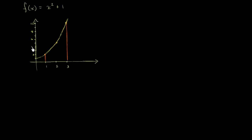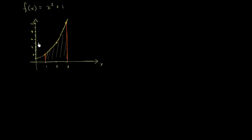What we're going to try to do in this video is approximate the area under the curve y equals x squared plus 1, between the interval x equals 1 and x equals 3. We're going to approximate it by constructing four rectangles under the curve of equal width. So let's first think about what those rectangles look like.